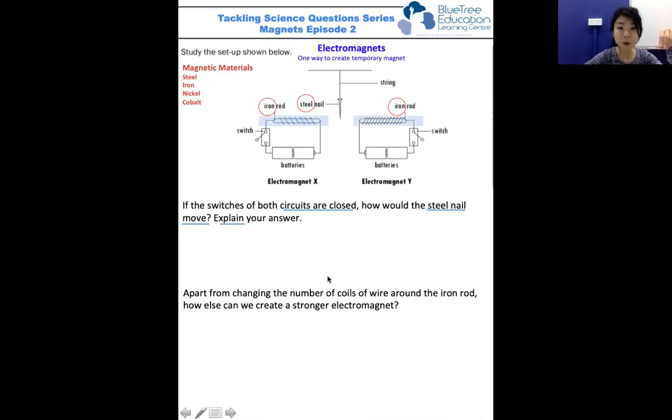Next, look at the number of coils around the iron rod. If you look closely, there are more coils of wire around electromagnet y than electromagnet x. For electromagnets, the more coils of wire around the iron rod, the stronger the strength of the magnet. This is the concept behind answering this question. Since this is a stronger magnet, the steel nail will naturally be attracted towards electromagnet y.